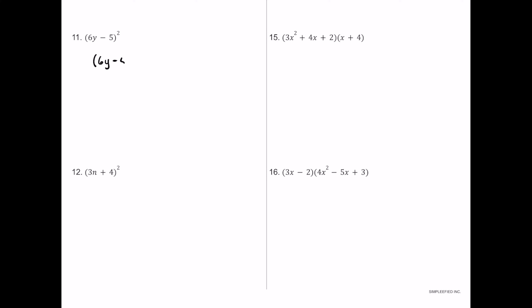For number eleven, we expand 6y minus 5 squared by writing two identical binomials: 6y minus 5 times 6y minus 5. Distributing the first 6y: 6 times 6 is 36, y times y is y squared, giving 36y squared. Then 6y times negative 5 is negative 30y.